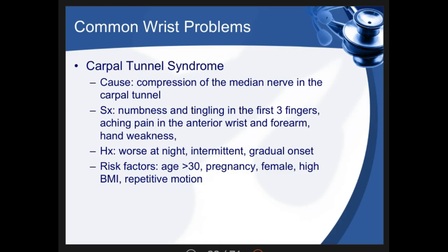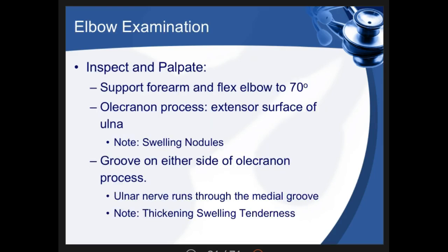Carpal tunnel syndrome is caused by compression of the median nerve within the carpal tunnel at the base of the hand. Symptoms include numbness, tingling, aching, and pain in the wrist, forearm, and hand, sometimes with hand weakness, typically worse at night with gradual onset. It is more common in women, particularly during pregnancy due to fluid overload, and in those with high BMIs or repetitive motion occupations such as typing.